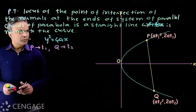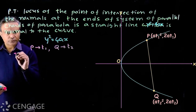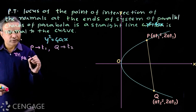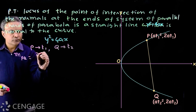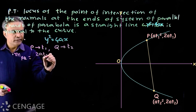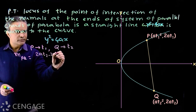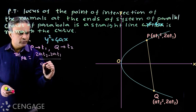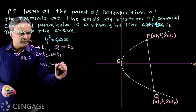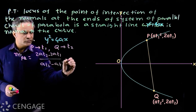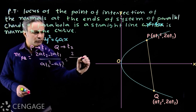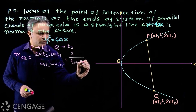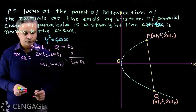Now what is the slope of the chord PQ? The slope of chord PQ is (2at2 − 2at1) / (at2² − at1²), which simplifies to 2 / (t1 + t2).